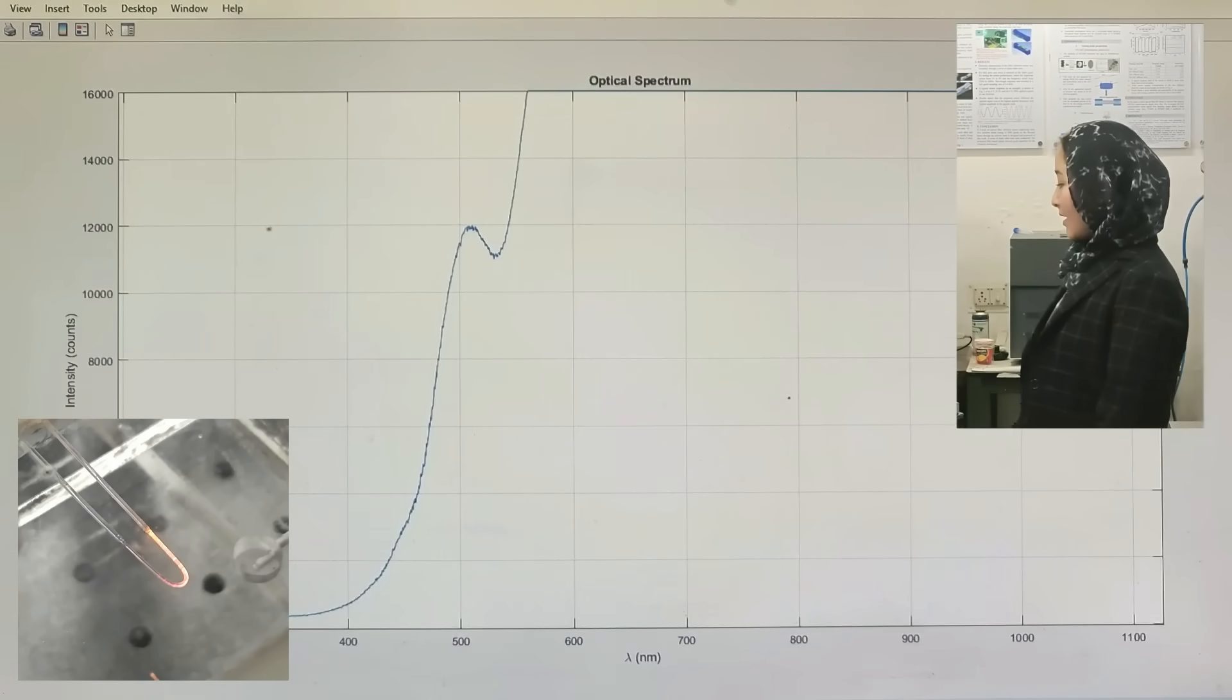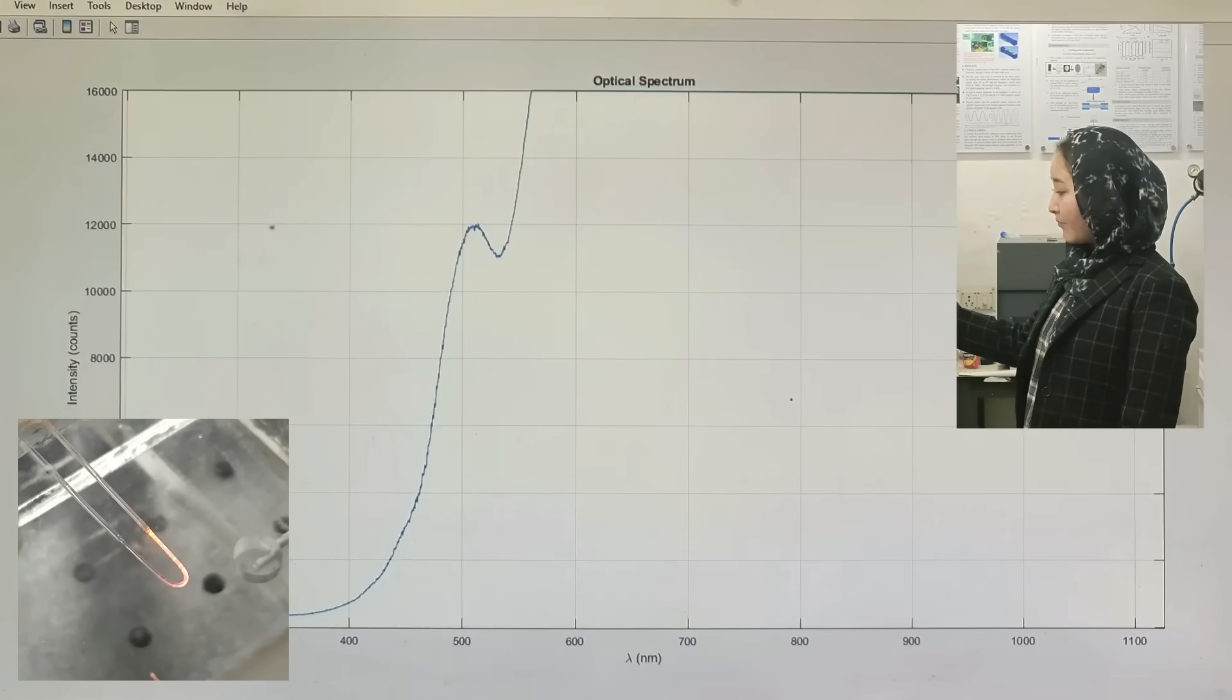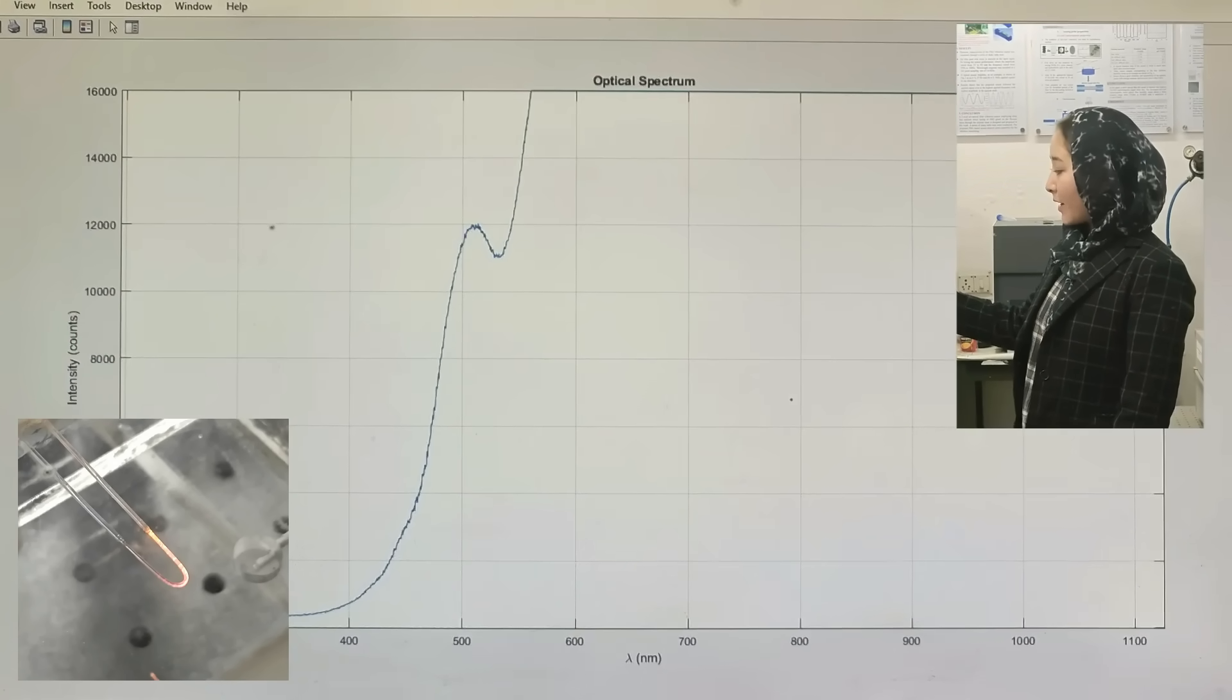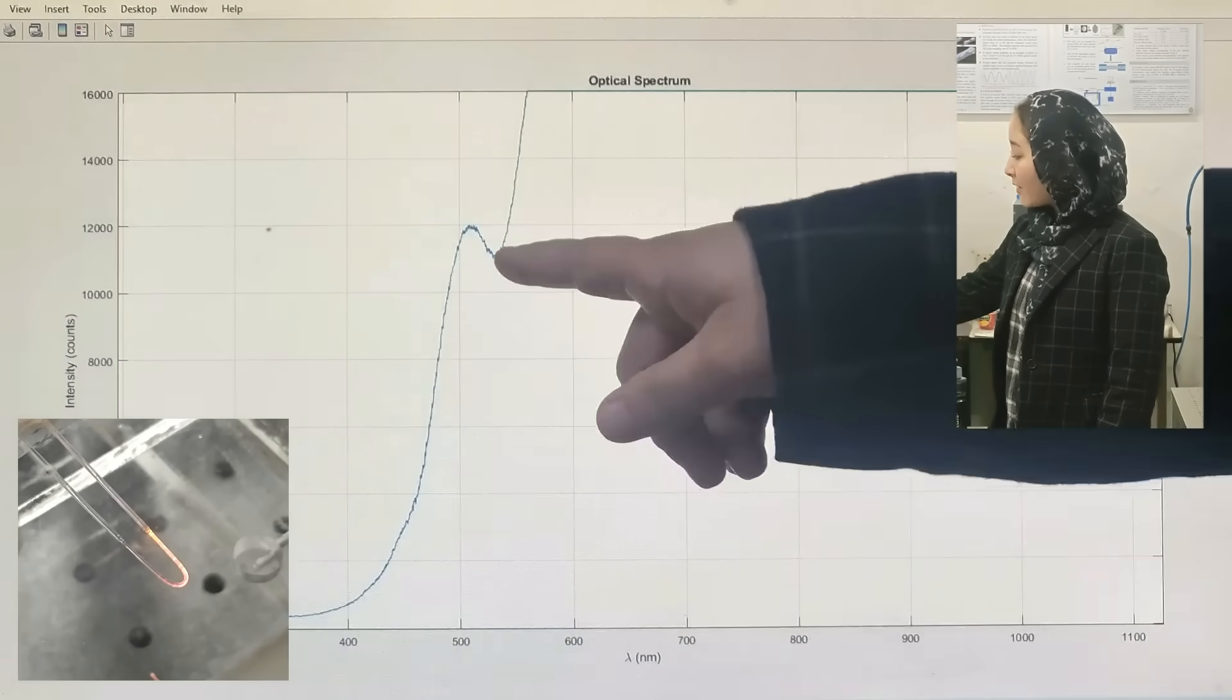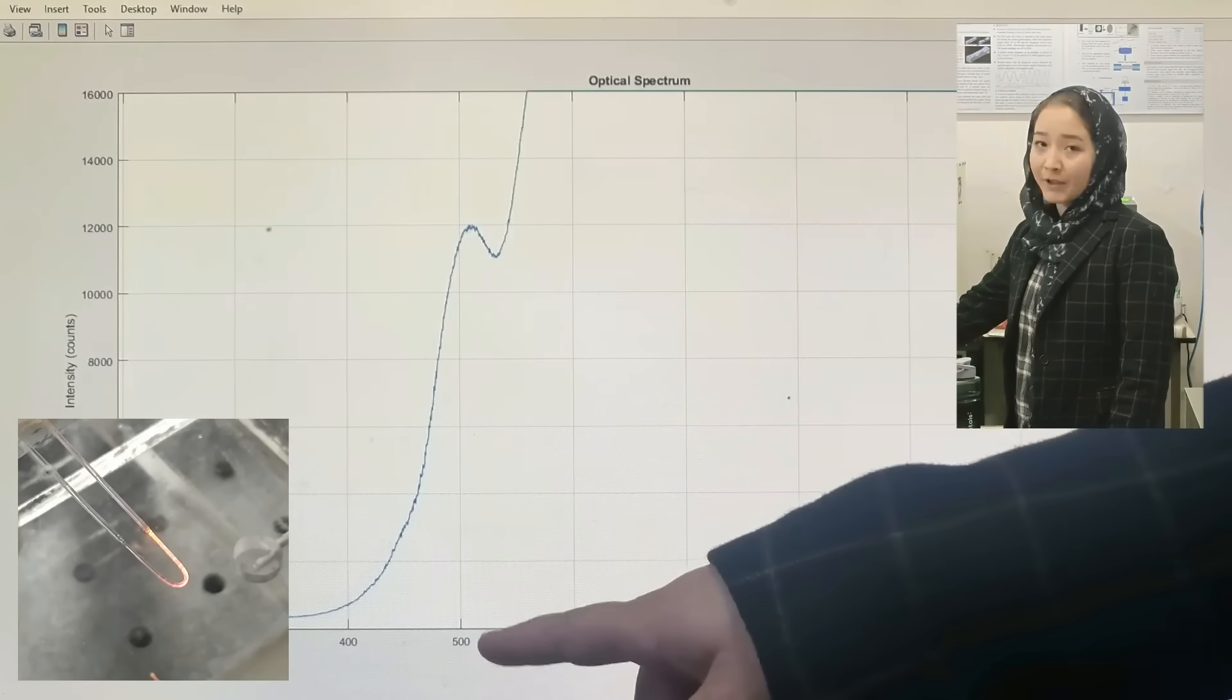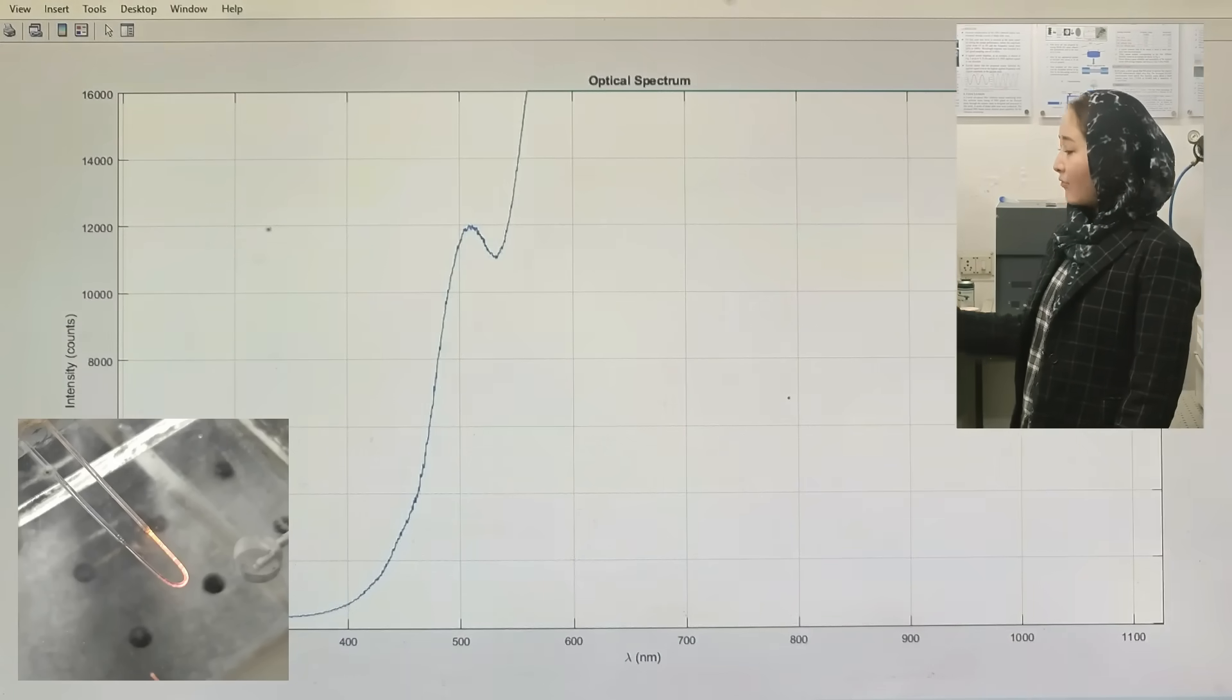As you can see, this is the transmitted spectrum being captured from the optical fiber sensor when the sensor is exposed to air. In the spectrum, you can see a dip. This is the resonance dip that occurs at a particular wavelength and this resonance dip is the characteristic feature of LSPR.